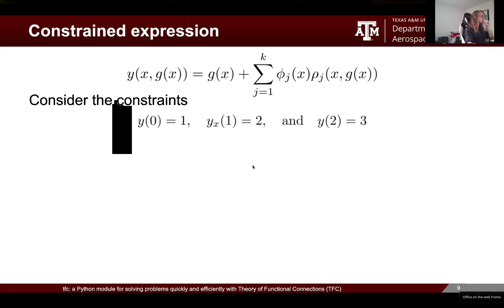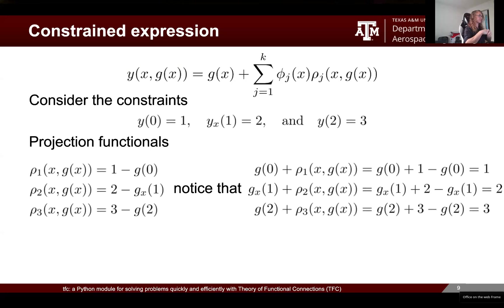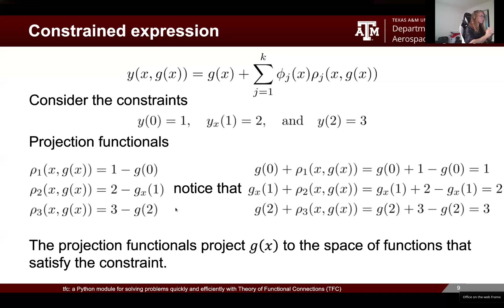Suppose I have two absolute value constraints and one derivative constraint. Starting with the projection functionals: if I take the first projection functional — equal to one minus G(0) — and add it to G evaluated at the constraint point x=0, regardless of G, I always get the constraint value of one. There's a similar property for the other two projection functionals. These things do the actual projecting of the free function G to the set of functions satisfying the constraints.